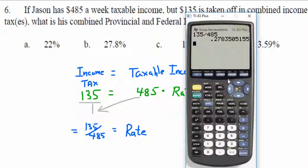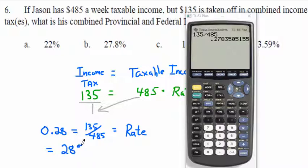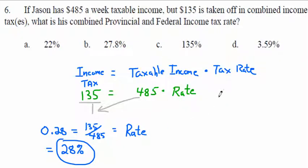Put 135 divided by 485 into the calculator and you get 0.27835 — roughly 0.28. Turn that into a percent: 0.28 means 28 one-hundredths, which is 28 per hundred — we call that 28%. So 0.28 is the same thing as 28%. You had to divide by 485 to solve backwards — that's called algebra and we'll do lots more of it.